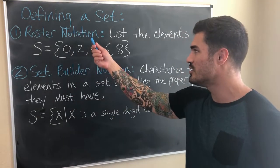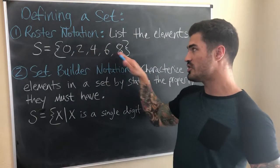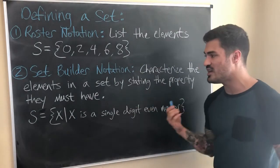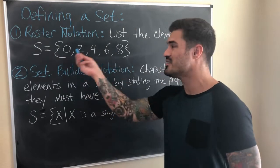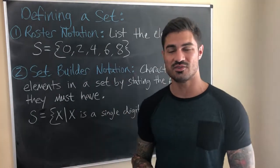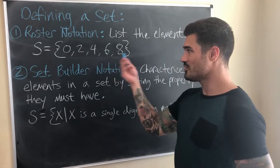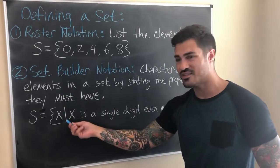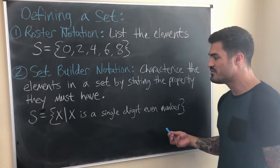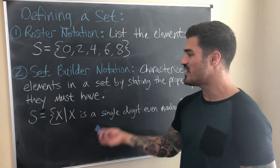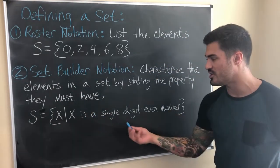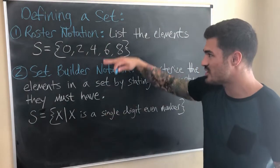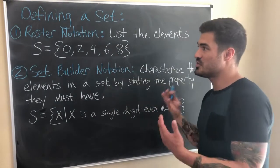So this set contains the elements 0, 2, 4, 6, and 8 — that's roster notation. With set builder notation, we characterize the elements by stating the property they must have. These elements are all single digit and all even, so we write: {x | x is a single digit even number}. This defines the exact same set using set builder notation — we state the property that objects must have in order to be elements of the set.